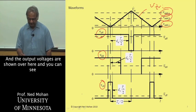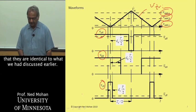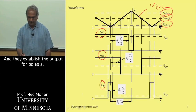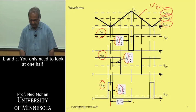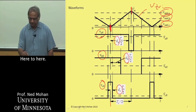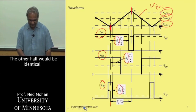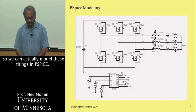You can see that they are identical to what we had discussed earlier, and they establish the duty ratio for poles A, B, and C. We only need to look at one half the switching time period from here to here. The other half would be identical. We can model these things in P-SPICE.